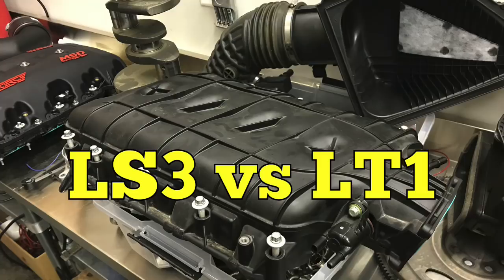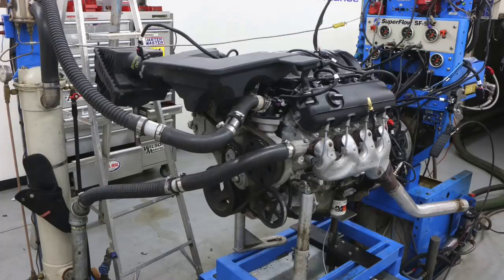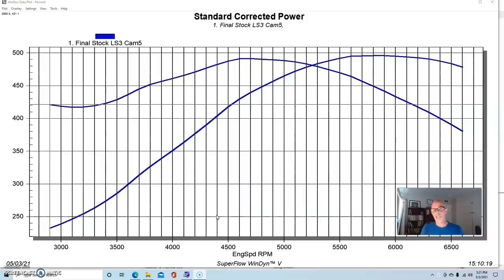After running the video on the comparison between the Gen 3 and Gen 4 5.3 liter and the Gen 5 L83 5.3 liter, everyone was up in arms. You need to compare the 6.2 liter stuff. How well does the 6.2 liter LS3 Gen 4 motor compare to the 6.2 liter LT1 Gen 5 motor? So here you have it. Here is a comparison between the LS3 and the LT1, both in stock and modified trim.